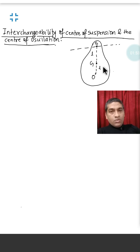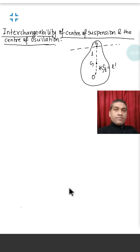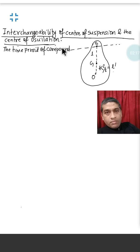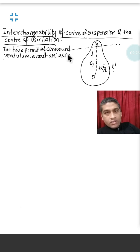GO equals K squared by L, and let us suppose this ratio equals L dash. Now I am writing the time period of compound pendulum about an axis.